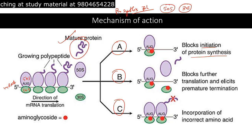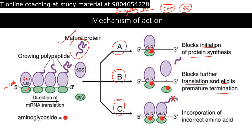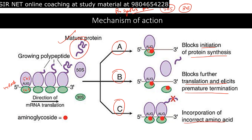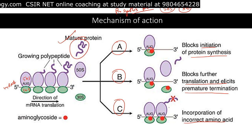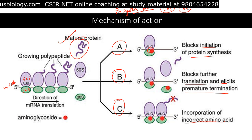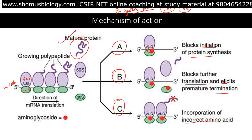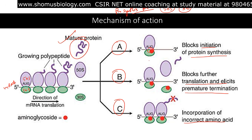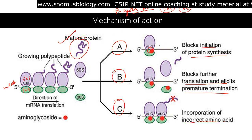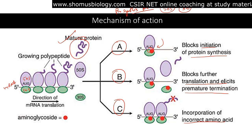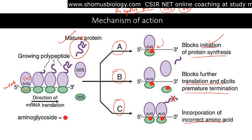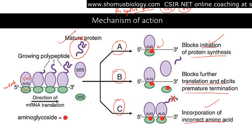The three effects are: first, it can block the initiation of protein synthesis; second, it blocks further translation and elicits premature termination; and third, it causes incorporation of incorrect amino acids by allowing misreading of mRNA by the ribosome. This leads to formation of truncated proteins. Aminoglycosides bind to the 30s subunit, causing blockage of initiation and codon misreading, so truncated peptides are produced.